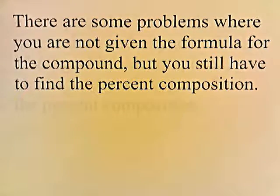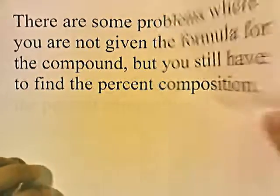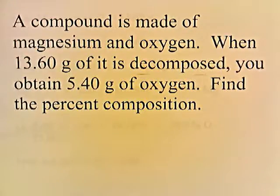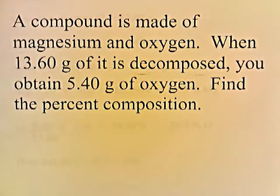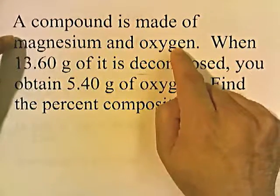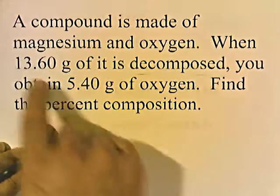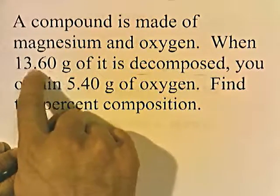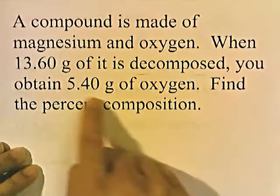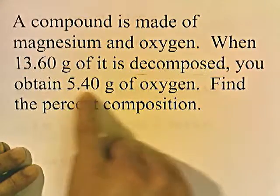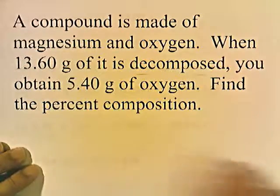There are some problems where you're not given the formula for the compound, but you still have to find the percent composition. Here's a problem: a compound is made of magnesium and oxygen. When 13.6 grams of it is decomposed, you obtain 5.40 grams of oxygen. Find the percent composition. The compound is made of magnesium and oxygen, and when we broke the 13.6-gram sample apart into its components, we weighed the oxygen and got 5.40 grams. But we don't know how much magnesium we have.